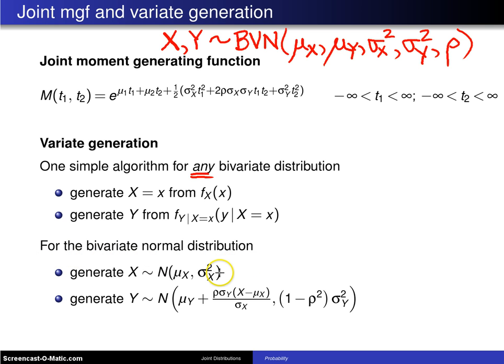For the bivariate normal distribution, the marginal distribution of X is normal. So generate X from its marginal distribution. To visualize this, there's the value μx and μy—that's the center of the distribution—and there's a concentration ellipse around that.